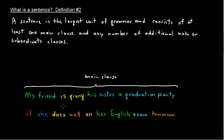Actually, the main clause tells us. Then, if that happens, my friend is giving his sister a graduation party. So this cannot stand alone. This is a subordinate clause.